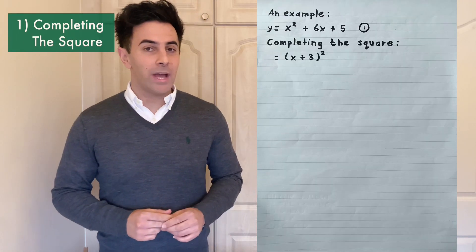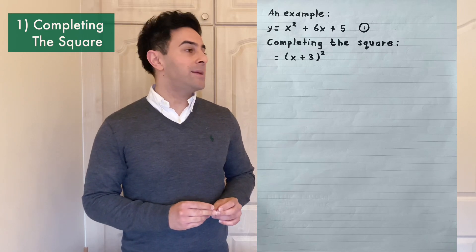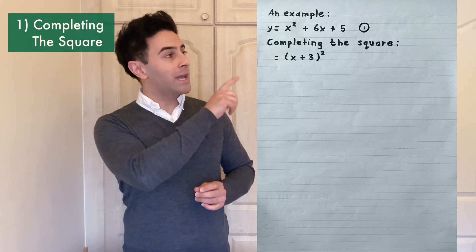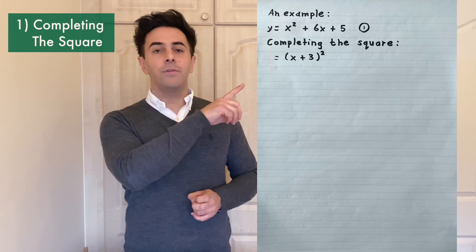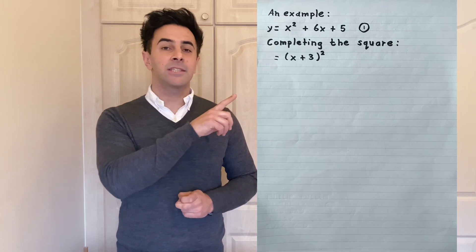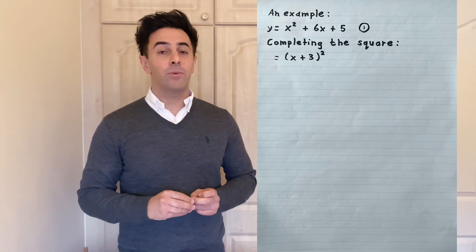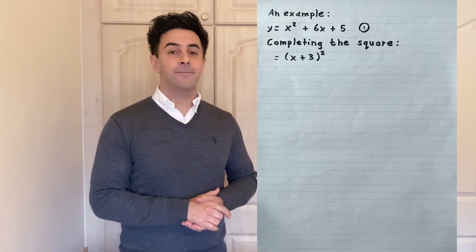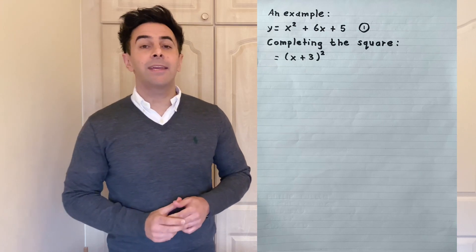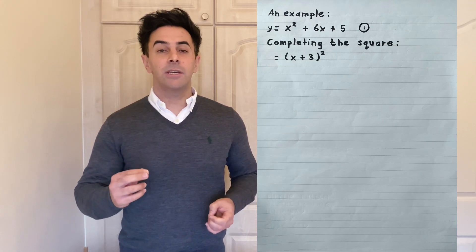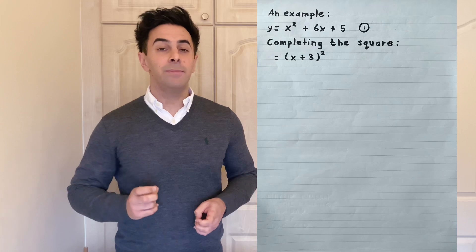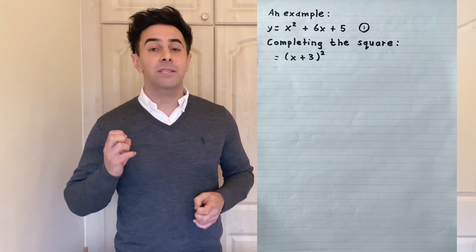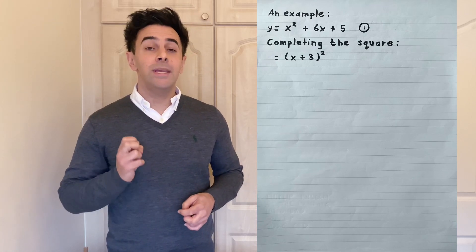So for completing the square you have to introduce a bracket term and you also have to look at the middle coefficient for x which is 6. Now half of 6 is 3 and we're going to introduce that into the bracket like so which we will explain very shortly. The purpose of introducing the bracket is to isolate the x term and to make it easier for us to eliminate and identify what the value of x must be for the equation to equal 0.